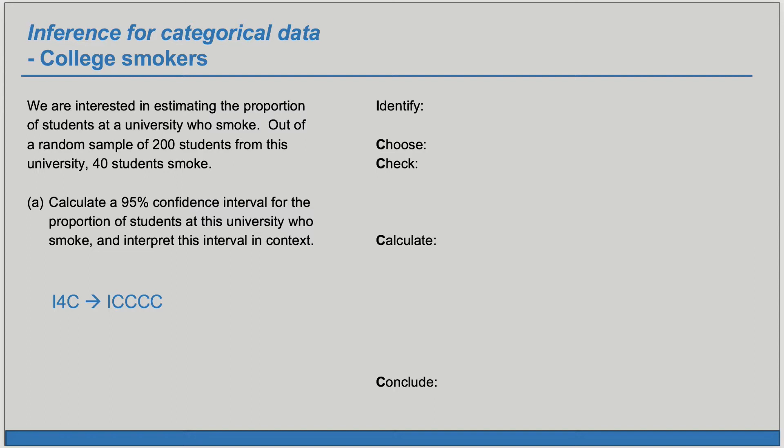When we do a confidence interval it's nice to first identify what it is that we're trying to estimate. We can identify the parameter of interest and the confidence level with which we'll estimate it. In this case we want to estimate the proportion of students at this university who smoke at the 95% confidence level.